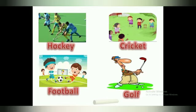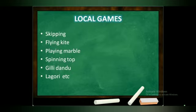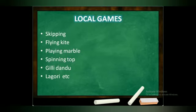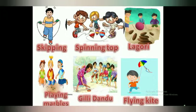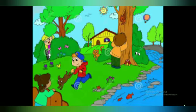There are also some local games which you play, like skipping, flying a kite, playing with marbles, spinning the top, gilly dandu, lagori, hopping, and monkey pram. These are called local games. Here you can see pictures of skipping, spinning the top, lagori, playing marbles, gilly dandu, and flying kites.